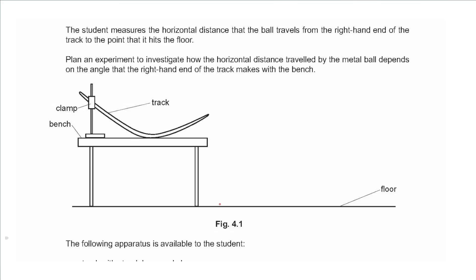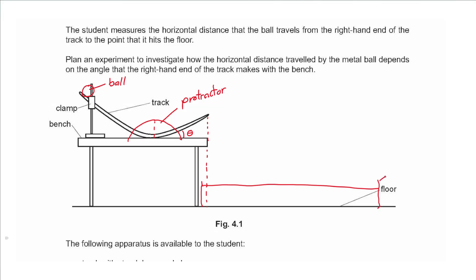Use a tray of sand to mark where the ball lands — it creates a hole and we measure the distance to the hole. For the diagram: draw the ball, draw a protractor showing angle theta, label the edge of the track as a dashed line, draw a tray of sand as a rectangle, and include a meter rule at the base.